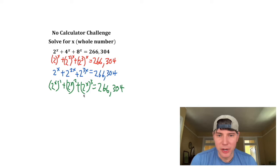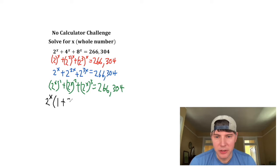For the next step, I'm going to factor out the greatest common factor 2 to the x. And 2 to the x times what is 2 to the x? That's 1. Plus, 2 to the x times what is 2 to the x squared? That would be 2 to the x. Plus, 2 to the x times what is 2 to the x cubed? That'd be 2 to the 2x. And this is all still equal to 266,304.